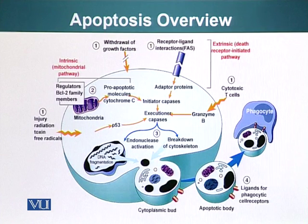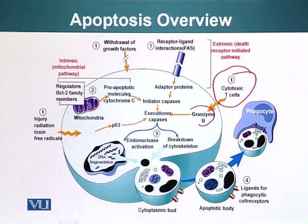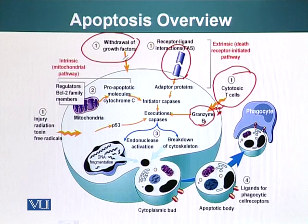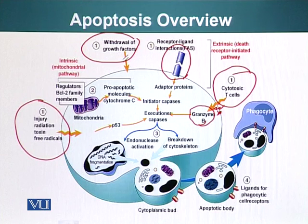Apoptosis can be caused by extrinsic factors. For example, cytotoxic T cells release granzyme B, which enters through the target cell wall when it is punctured. We have also talked about FAS and FAS ligands: the cytoplasmic domain assembles proteins called caspases, and once a caspase is activated it results in apoptosis. Withdrawal of growth factors, radiation, toxic elements, and free radicals can also cause apoptosis.